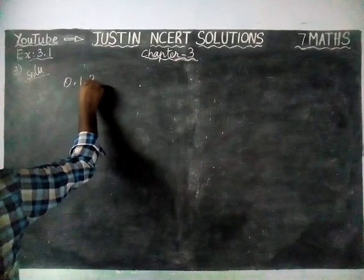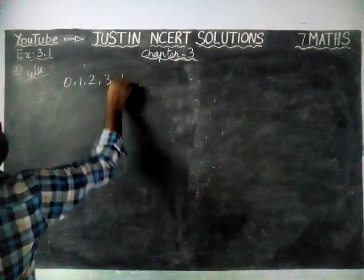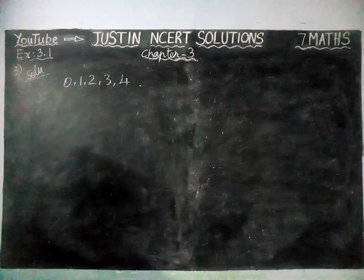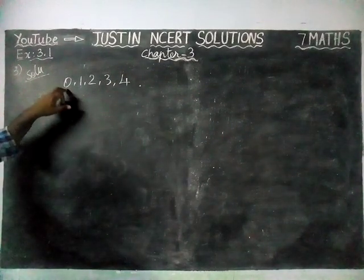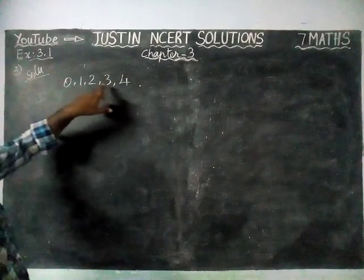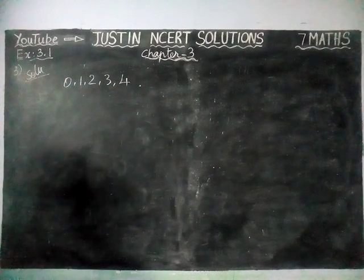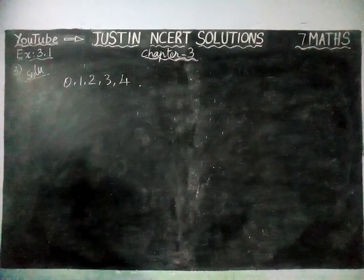The first 5 whole numbers are 0, 1, 2, 3, 4. Whole numbers start with 0, so 0, 1, 2, 3, 4 — these are the first 5 whole numbers. Now we have to find the mean.